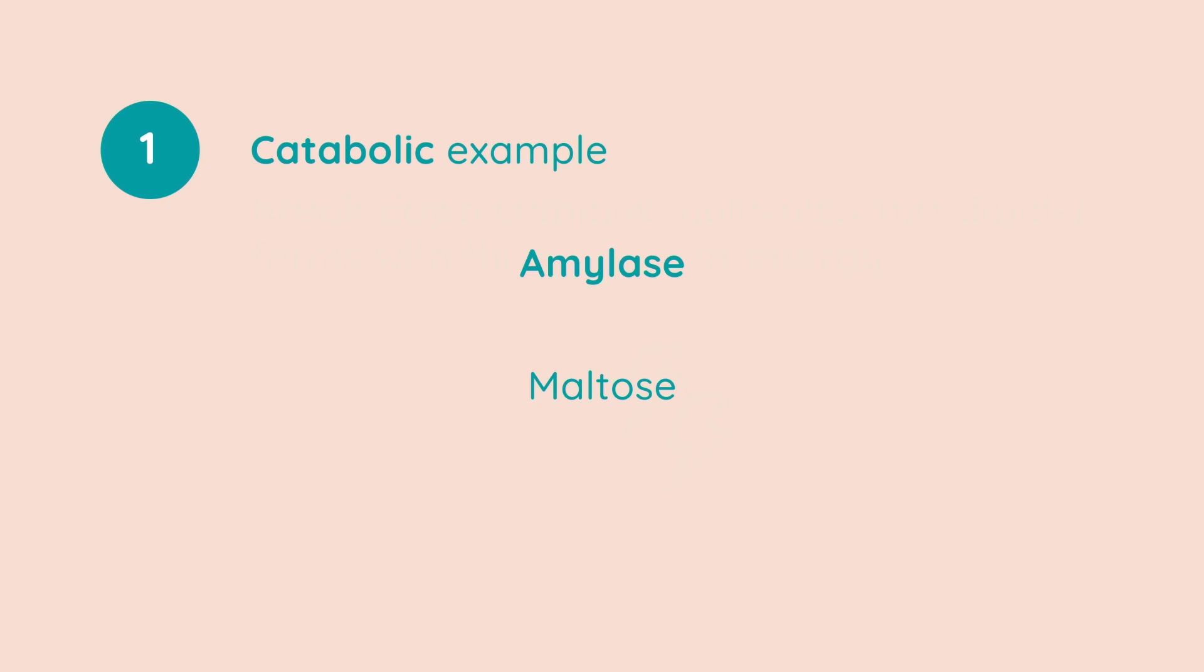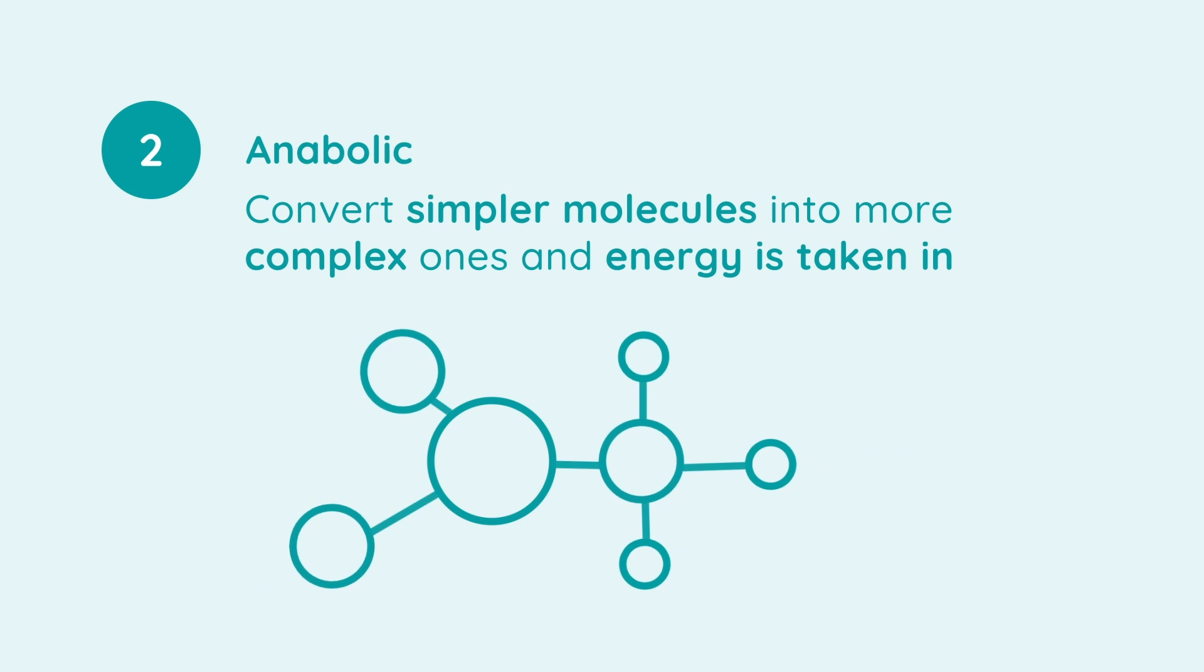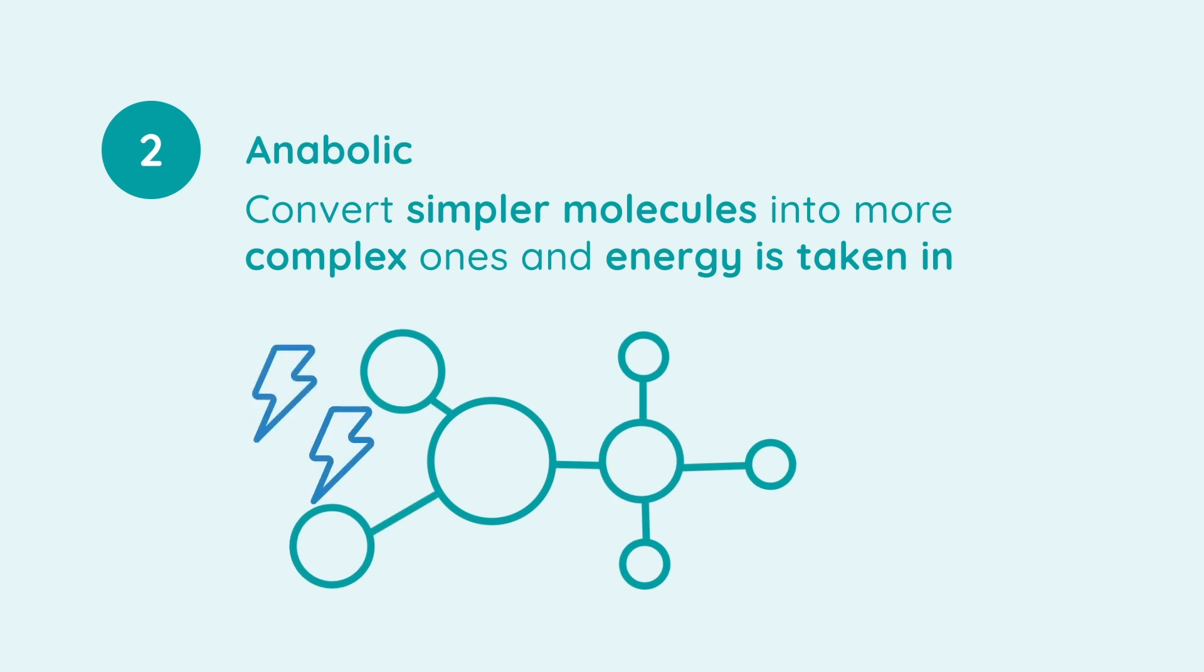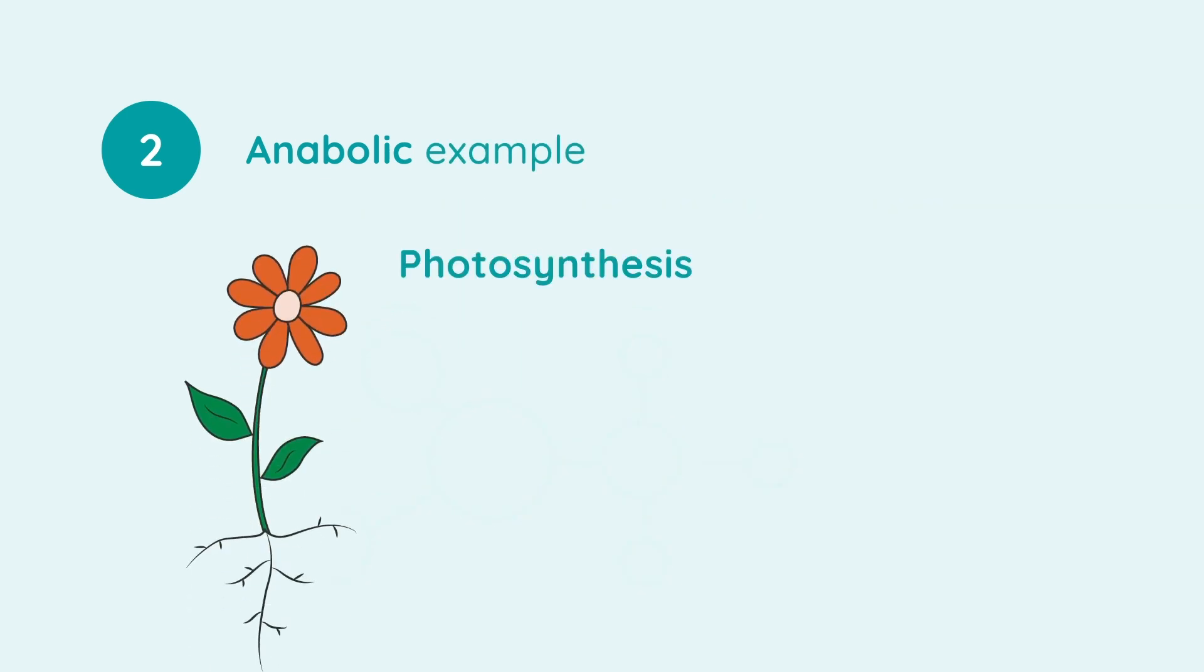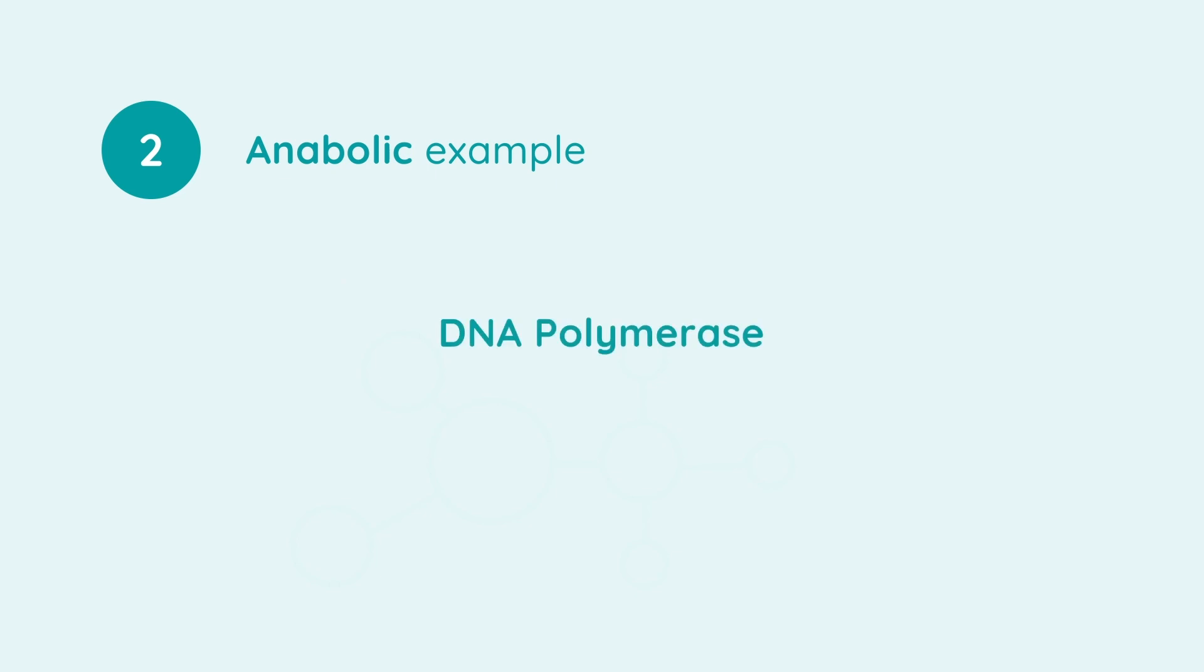The second type are anabolic reactions. Now, these convert simpler molecules into more complex ones and energy is taken in. For example, the enzymes that control photosynthesis are anabolic. Another example is DNA polymerase. This is an anabolic enzyme that helps repair damaged DNA.